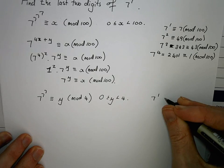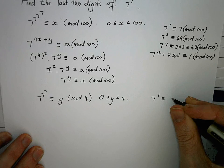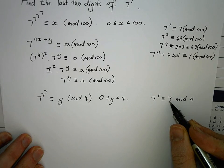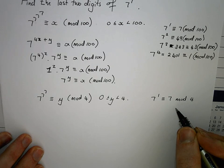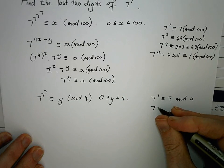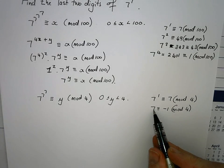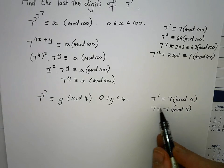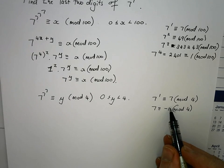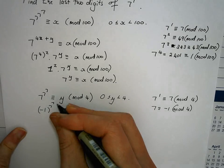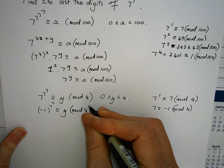7 to the power of 1 is congruent to 7 mod 4, which is also congruent to 3 mod 4, which is also congruent to minus 1 mod 4. Because if I take 7 and subtract 4, I get 3; subtracting another 4 gives minus 1. So 7 ≡ -1 (mod 4). Any power of minus 1 is very easy to work with. So 7^(7^7) ≡ (-1)^(7^7) (mod 4).